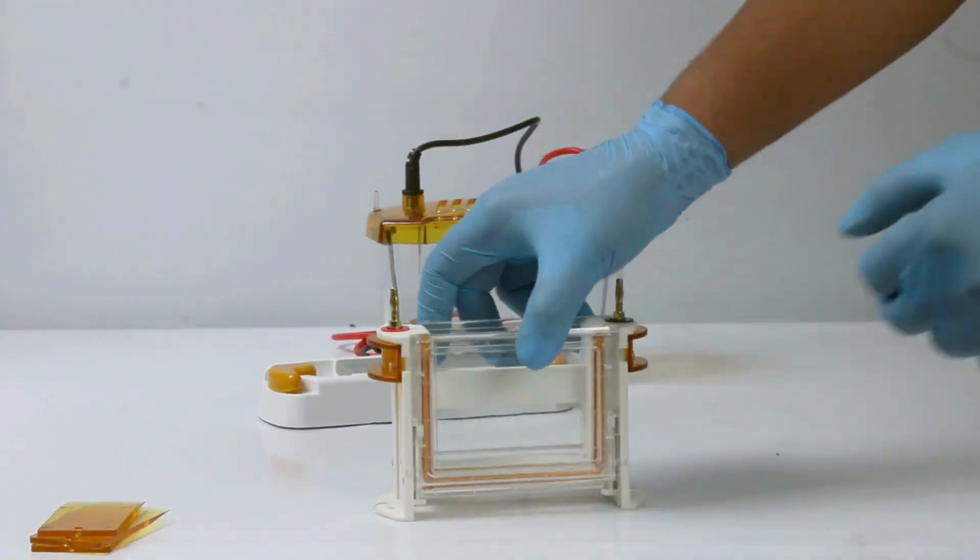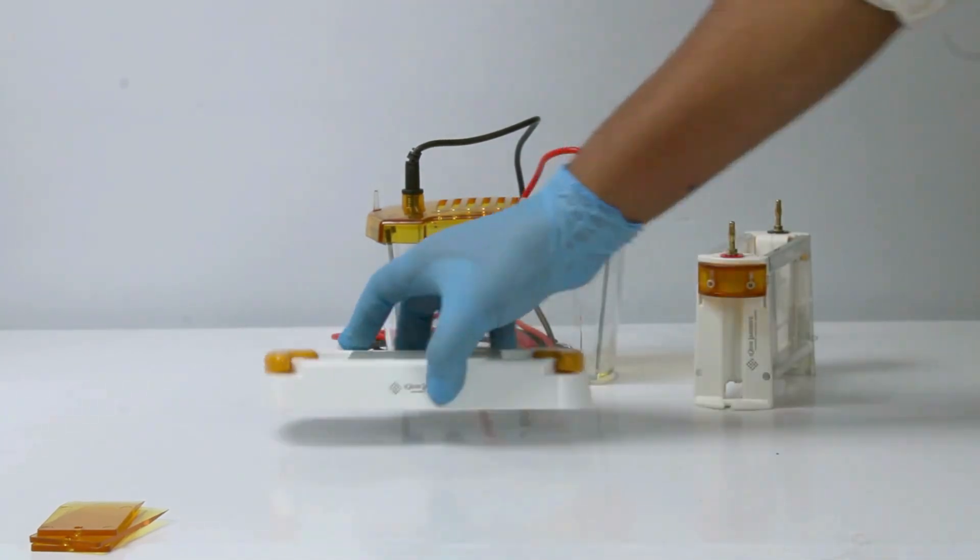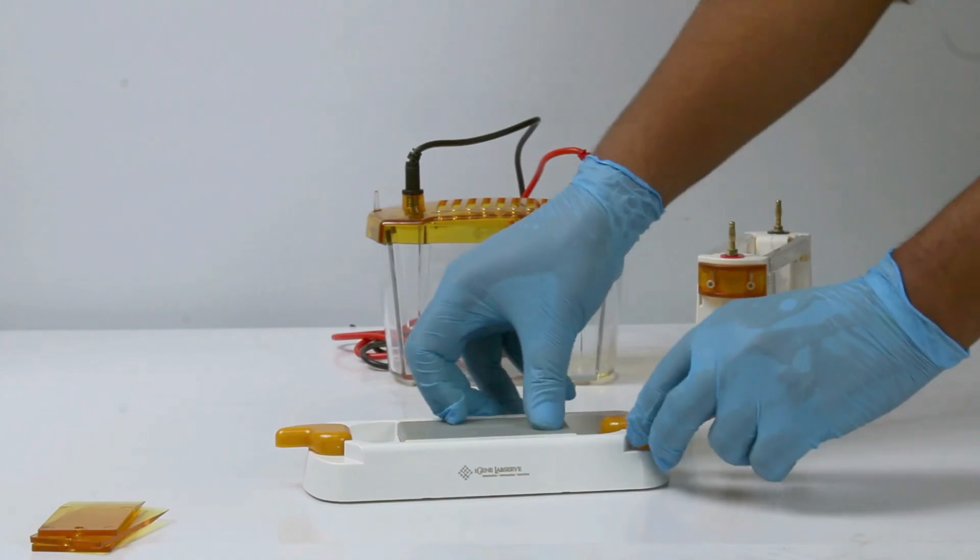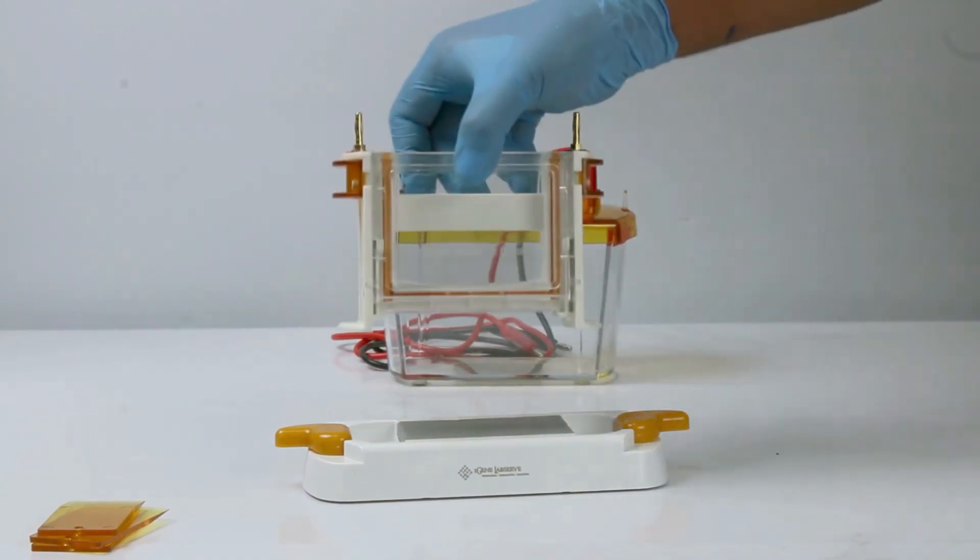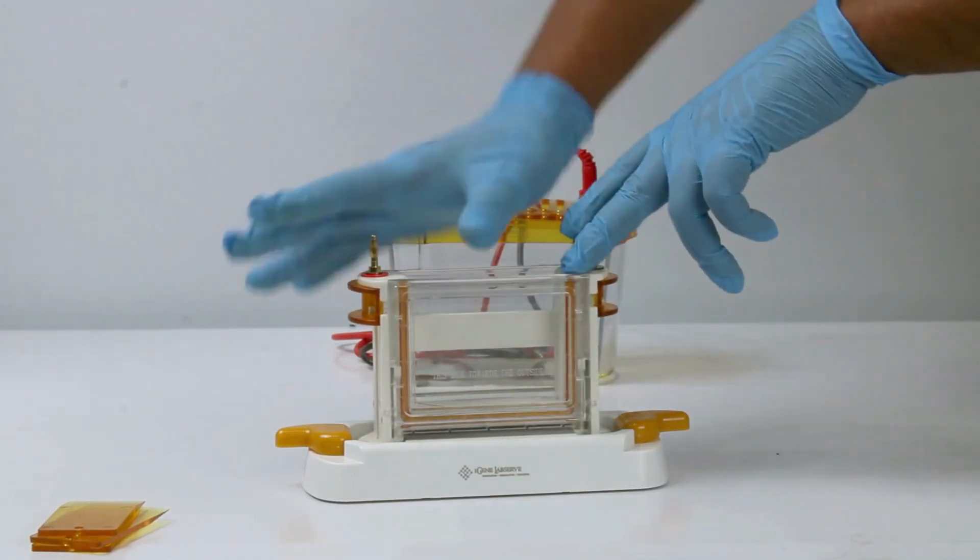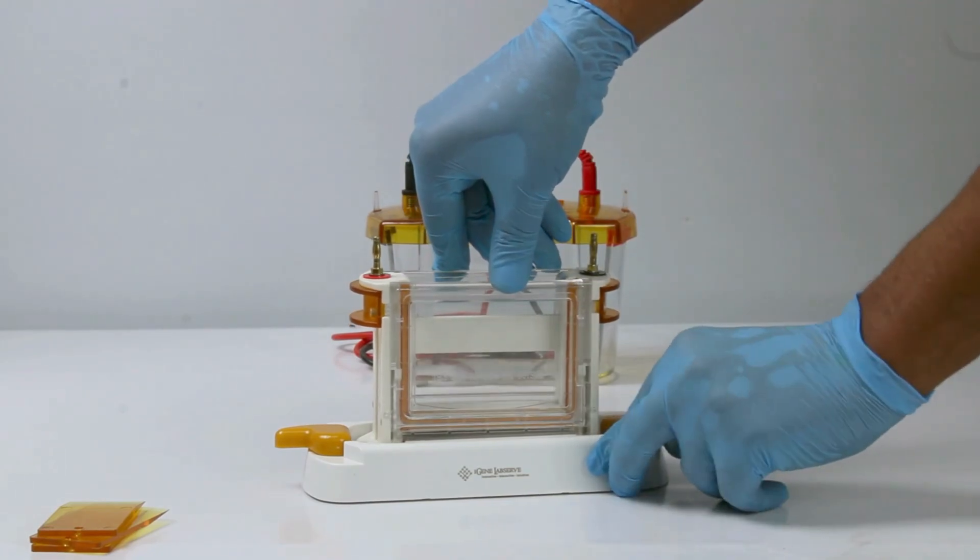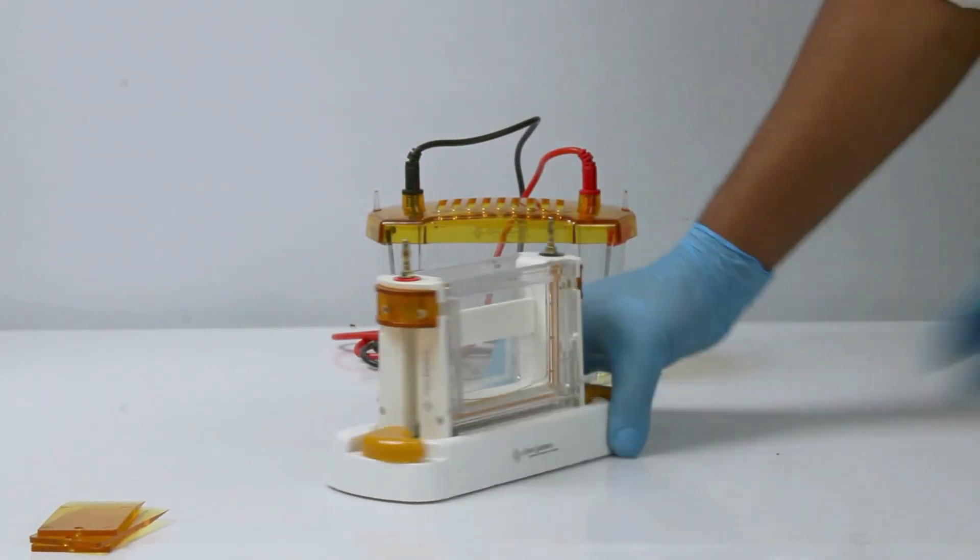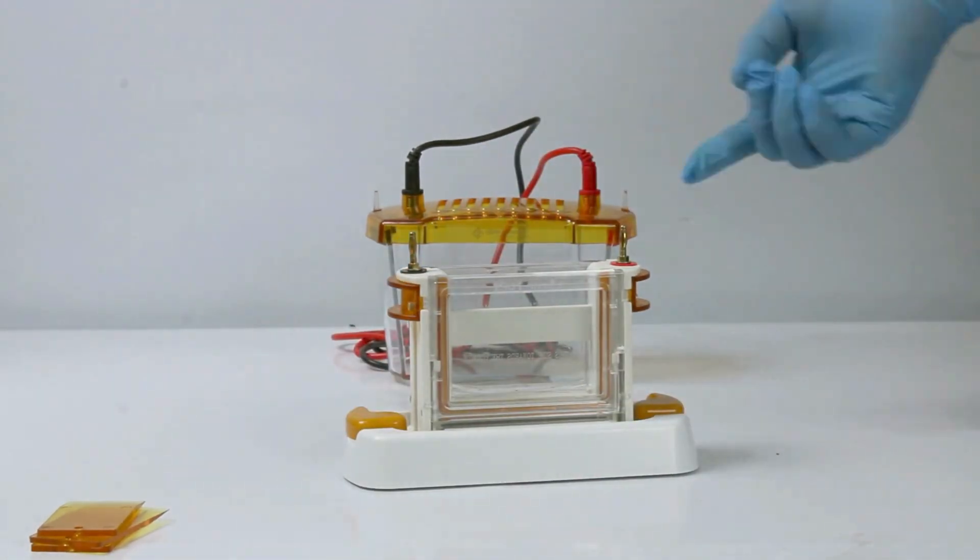Place the electrophoresis bracket into the gel making base holder. Loosen the knob by rotating them outward. Position the bracket in the center. Press it down and tighten the knob on both sides until fully secure.